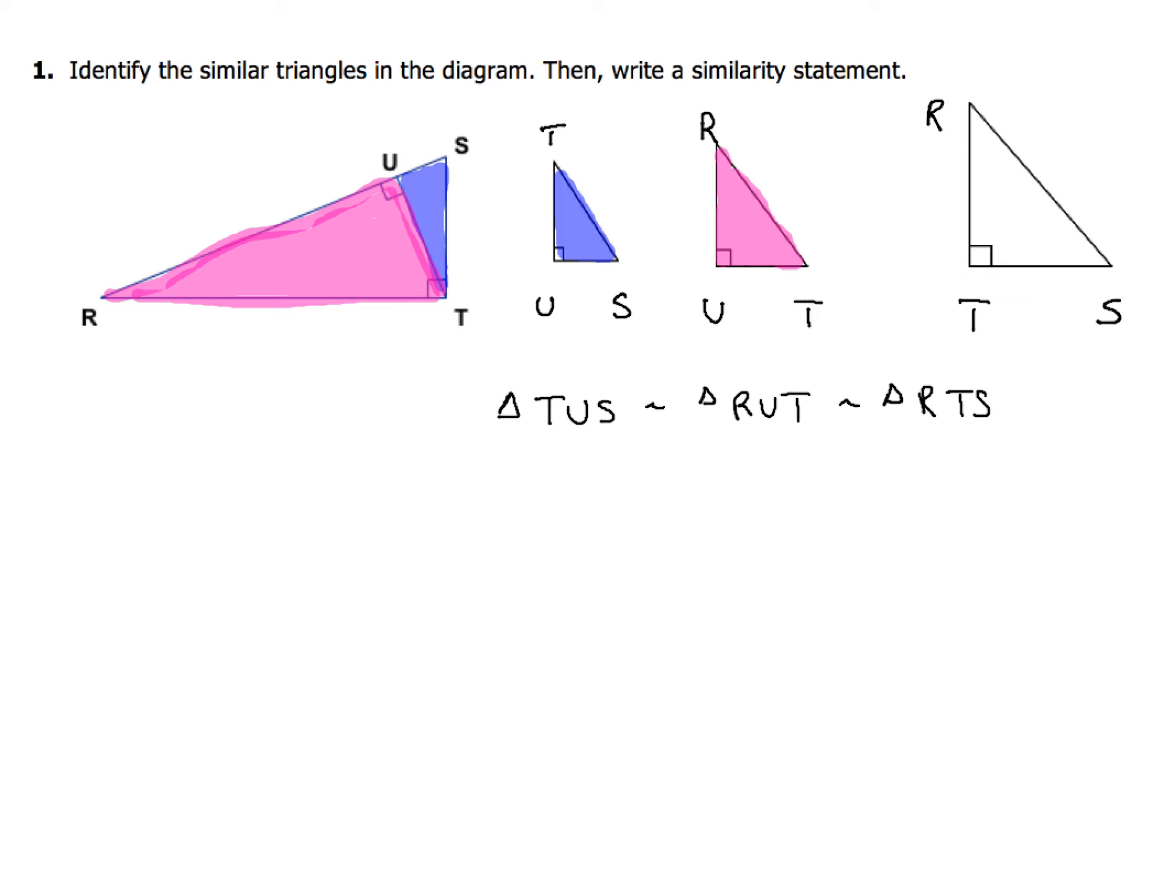Alright, so how did you do with that similarity statement? Did you get it? Good for you. Piece of cake. And again, that's using the technique to go down first and to the right second. Going from the long leg to the short leg of a right triangle. And that's it for this example one.